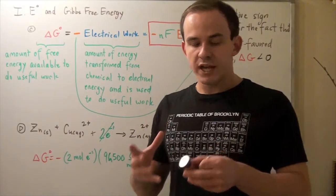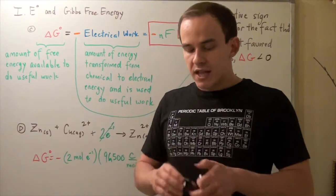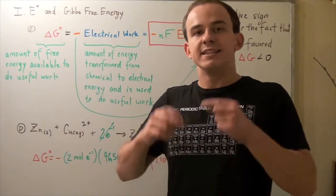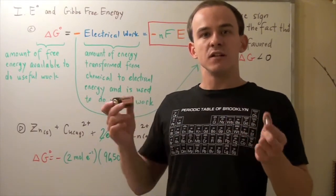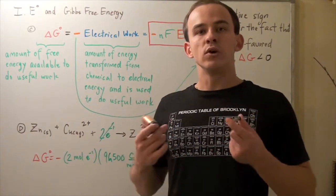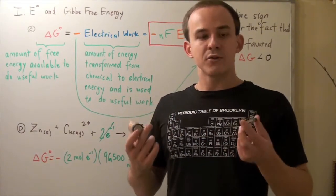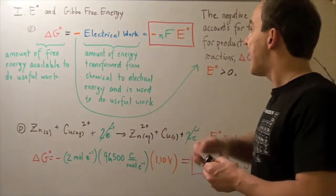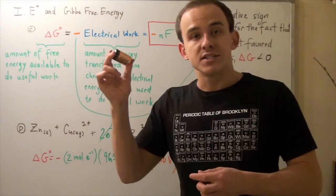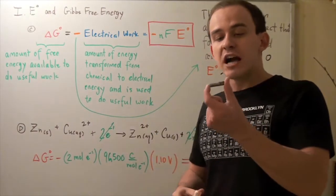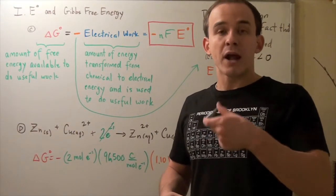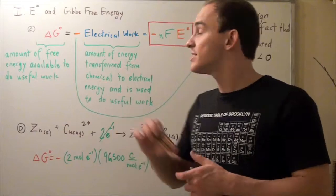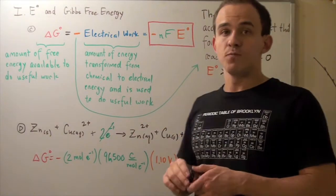A D battery has more energy than a AAA battery not because of a difference in cell voltage — in fact, both have the same cell voltage of 1.5 volts. The reason the D battery can do more work is because it has a larger N: more electrons and therefore a larger charge. For example, a AAA battery might power a light bulb for 15 minutes, while a D battery can power it for much longer because it has a greater N value and thus more total charge.